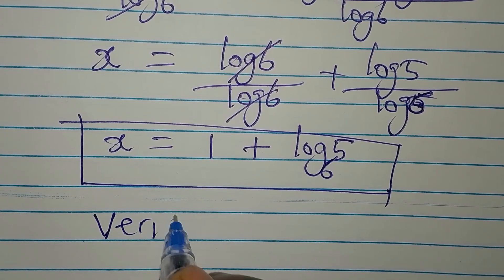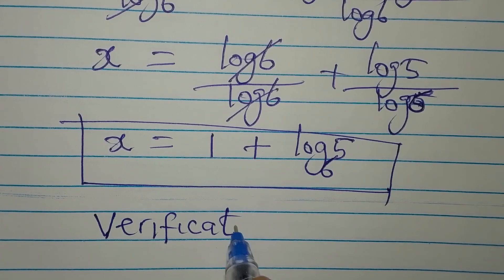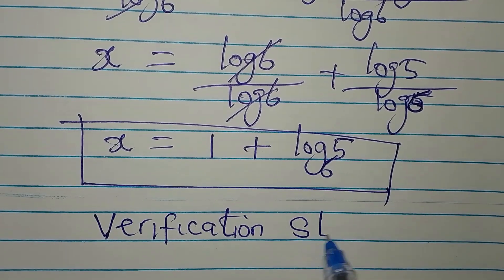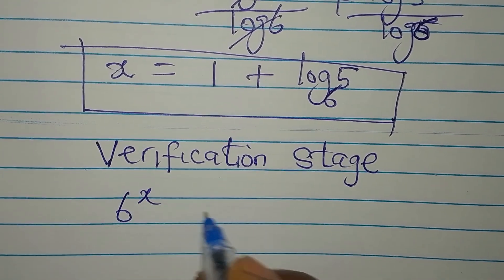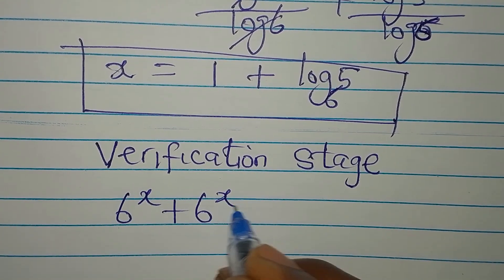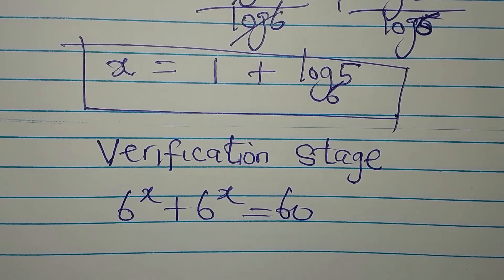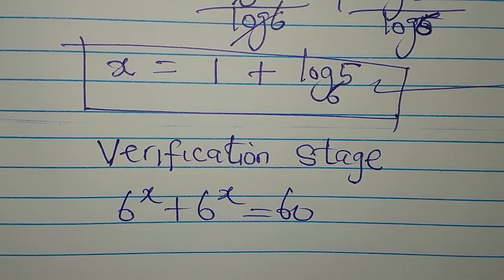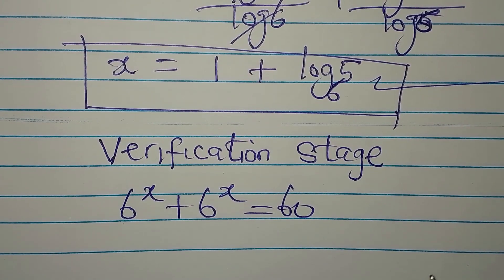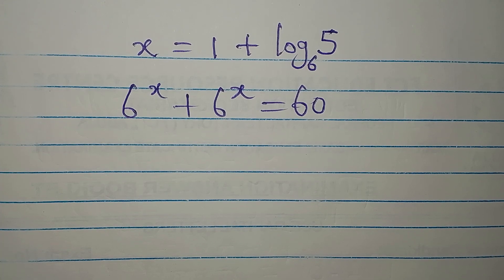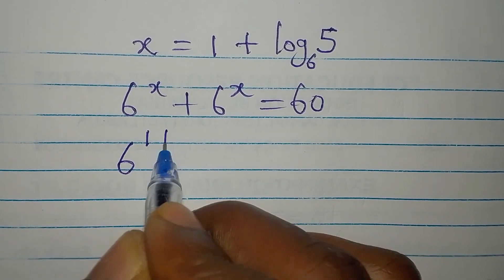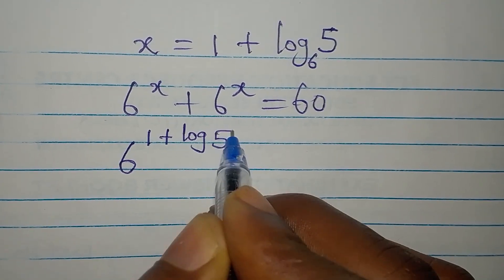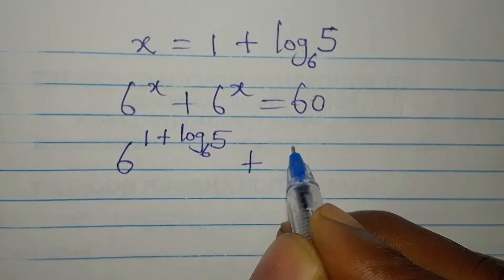Verification stage. Okay, so the original equation is 6 to the power of x plus 6 to the power of x equals 60. Now our x is this value. Let's put this value of x into the equation and see what we get.